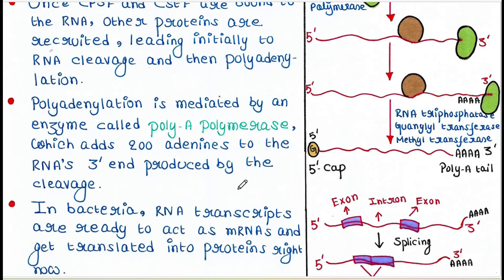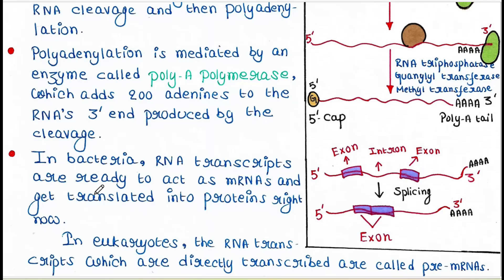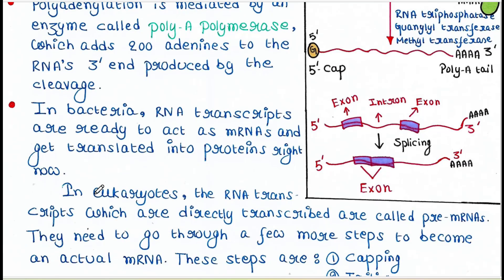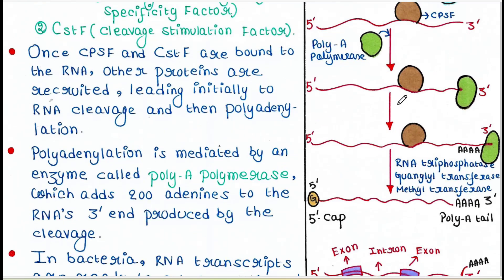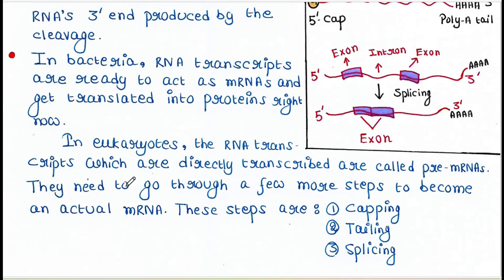Now, in bacteria, RNA transcripts are ready to act as mRNAs and get translated into proteins right away. But in eukaryotes, it is a little bit different. The RNA transcripts which are directly transcribed are called pre-mRNAs. They need to go through a few more steps to become actual mRNA.